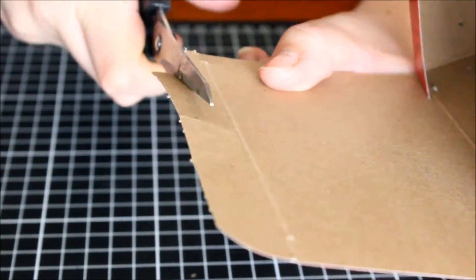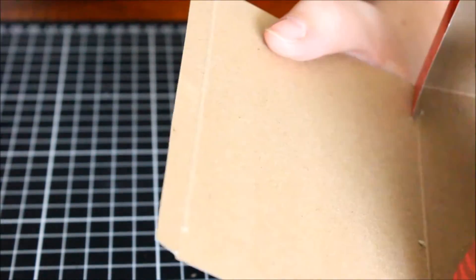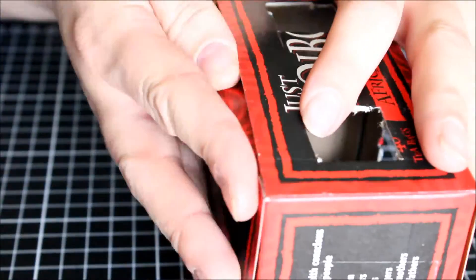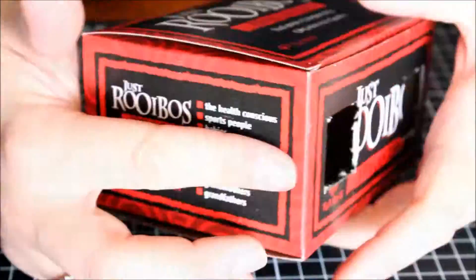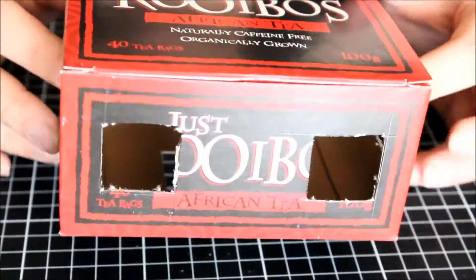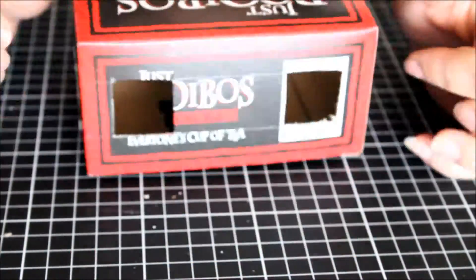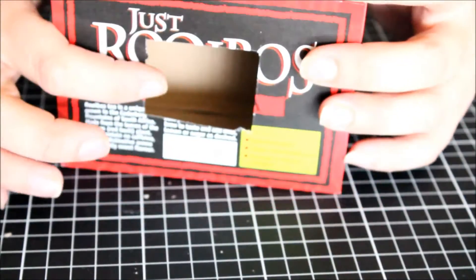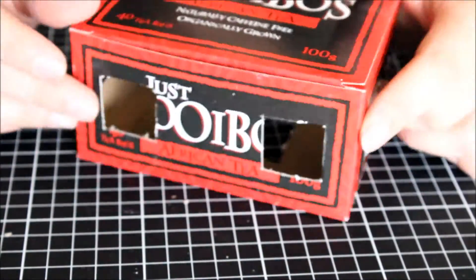This little flap was in the way of my windows. I'm just trimming that little flap down too so that does not show up inside my little window. Cut out all your windows very carefully.